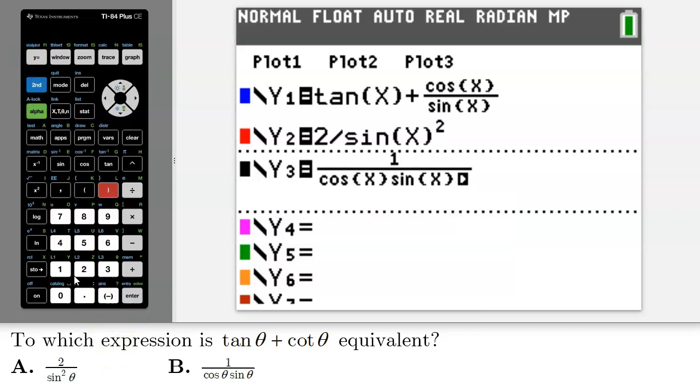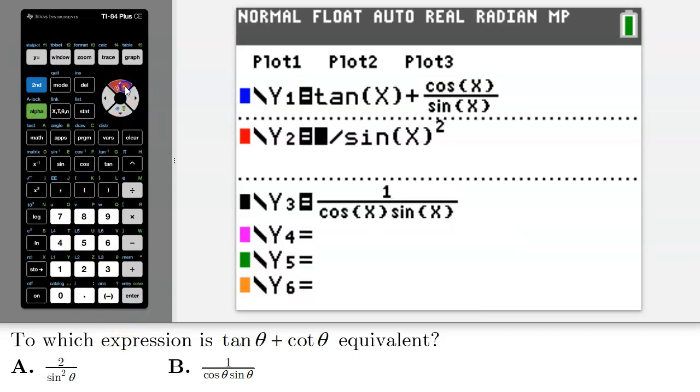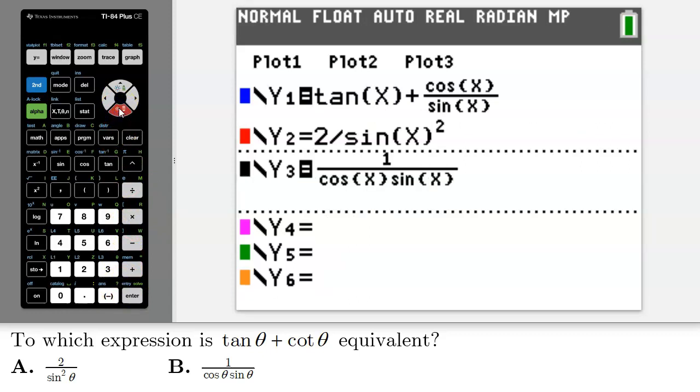Now before I press graph a third time I'm just going to go up to y2 and put my cursor on top of the equal sign and press enter. That will deselect that particular function so that I'll be able to see whether the black graph graphs on top of the blue graph.